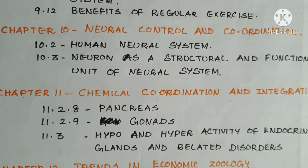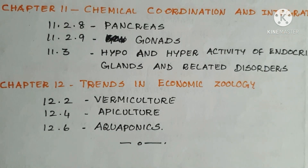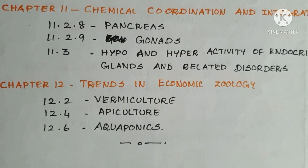9.12 Benefits of Regular Exercise. Chapter 10: Neural Control and Coordination — 10.2 Human Neural System, 10.3 Neuron as a Structural and Functional Unit of Neural System. Chapter 11: Chemical Coordination and Integration — 11.2.8 Pancreas, 11.2.9 Gonads, 11.3 Hypo and Hyperactivity of Endocrine Glands and Related Disorders. Chapter 12: Trends in Economic Zoology — 12.2 Vermiculture, 12.4 Apiculture, 12.6 Aquaponics. That's all.